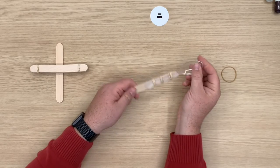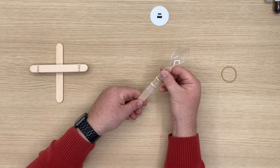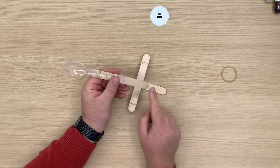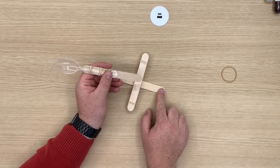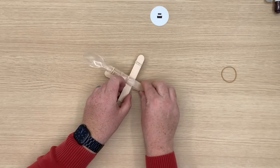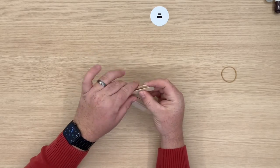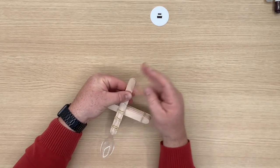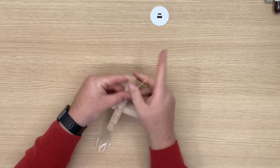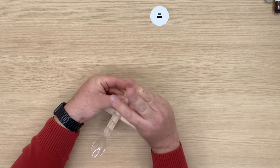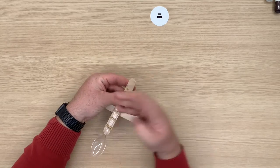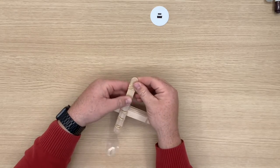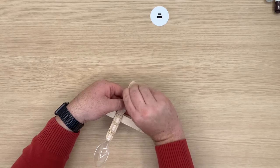All right, and now our spoon doesn't wobble that much. So our next step is we're going to secure the bottom end to our bottom right over here by wrapping the rubber band around it again. So it's a lot of wrapping these rubber bands back and forth. Once you get the hang of it, it's pretty easy.